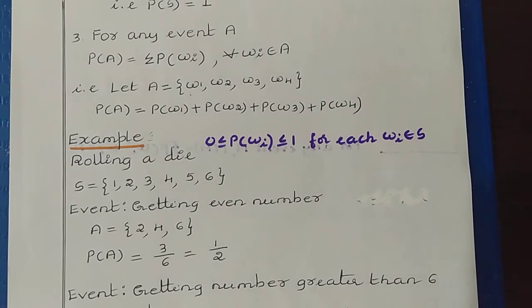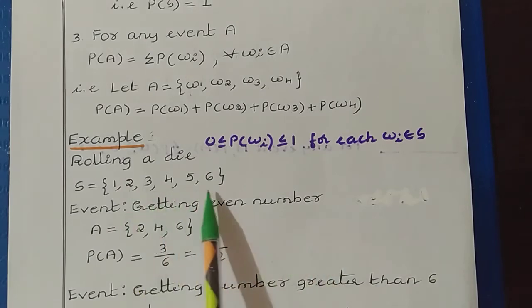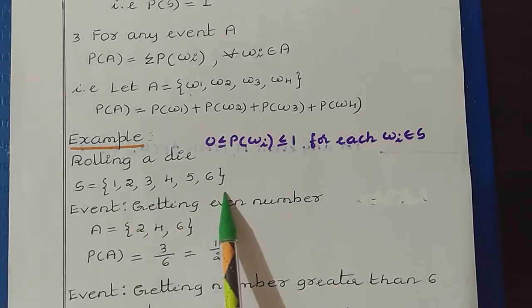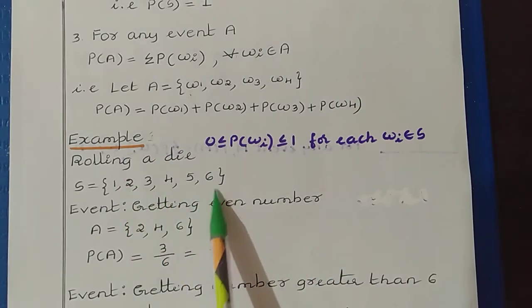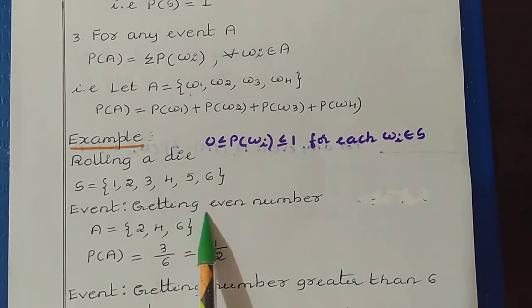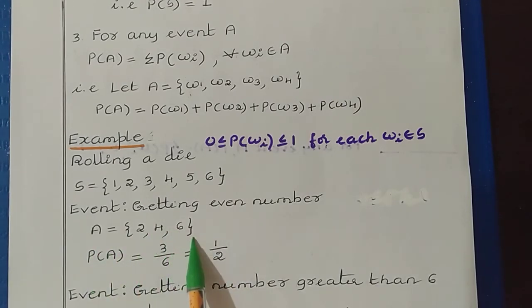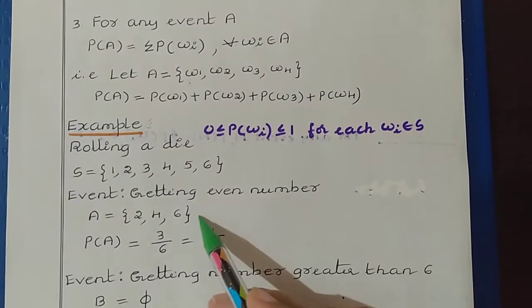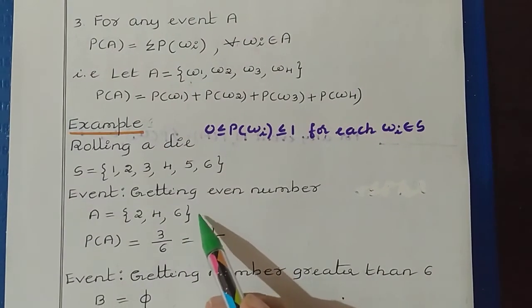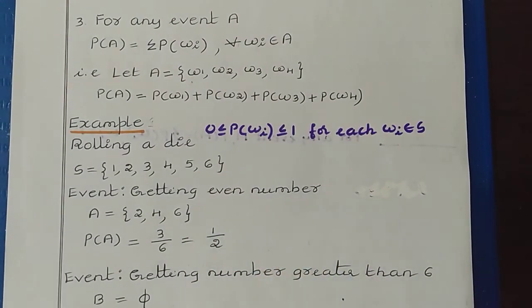Now let us consider two events. Event one is getting an even number. Here we have three even numbers: 2, 4, 6. So for this event, A = {2, 4, 6}. Now let us find the probability of A. To find the probability, we have the formula: number of favorable outcomes divided by total number of outcomes.